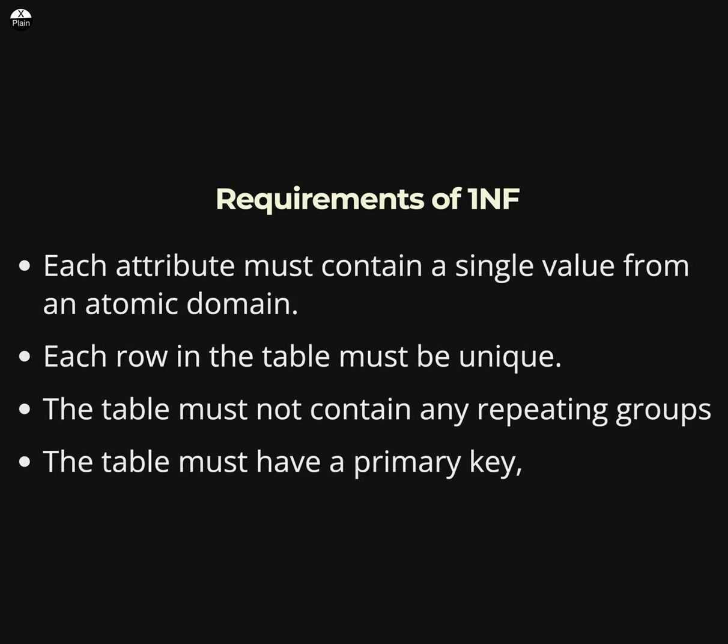To achieve first normal form, a table must meet the following requirements. Each attribute must contain a single value from an atomic domain. Each row in the table must be unique. The table must not contain any repeating groups — that is, two or more identical sets of columns that store the same type of data. The table must have a primary key, which is a unique identifier for each row in the table.